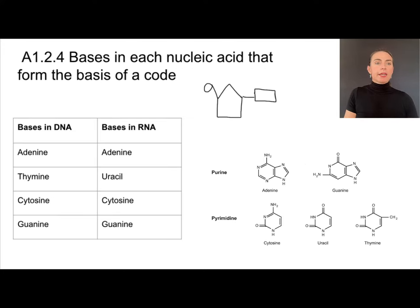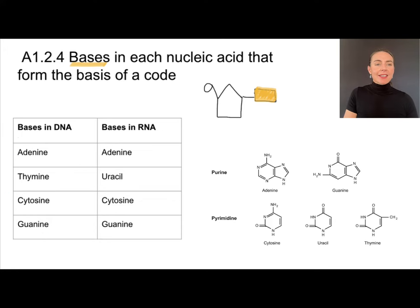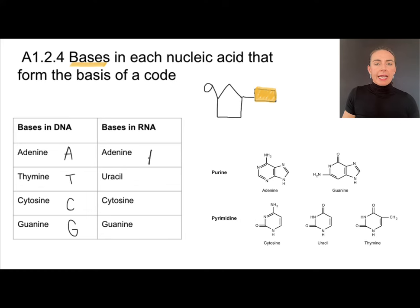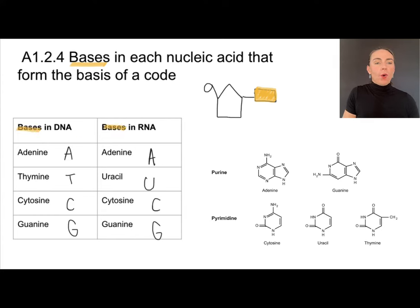In each nucleotide, we have a sugar, a phosphate group, and a nitrogenous base. In DNA, there are four different bases: adenine, thymine, cytosine, and guanine — sometimes abbreviated as A, T, C, and G. In RNA, we also find adenine, cytosine, and guanine, but thymine is replaced by a nitrogenous base called uracil.